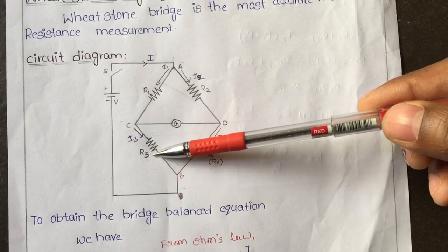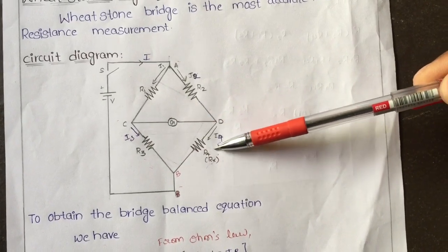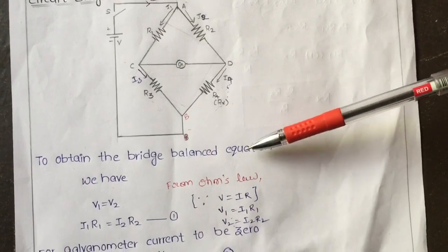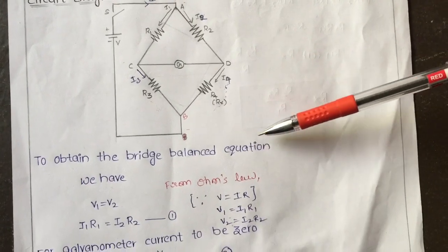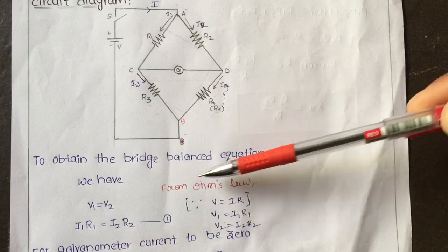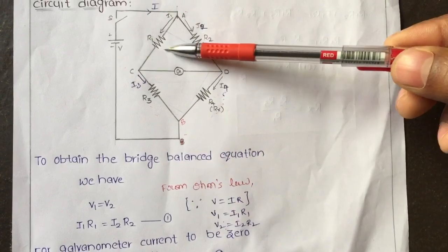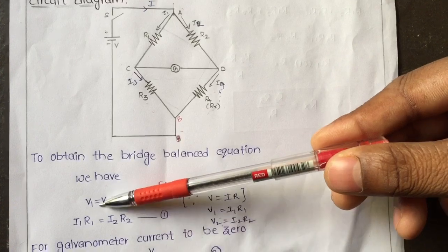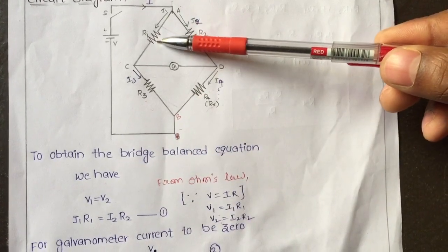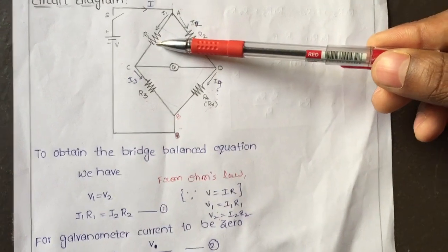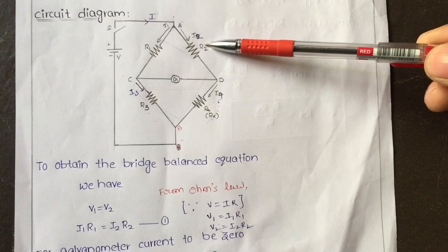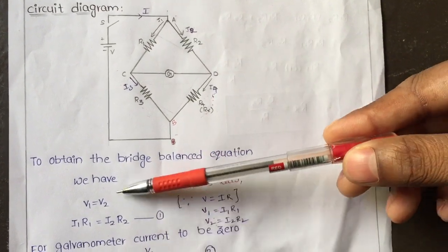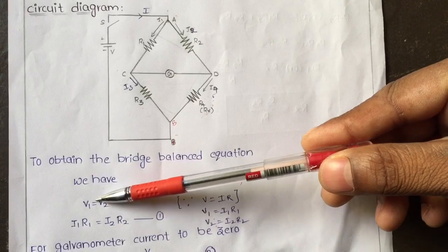Similarly, across R3 the current is I3 and across R4 it is I4. In order to obtain the bridge balance equation: when two resistors are connected in parallel the voltage across them is the same, so voltage across R1 is V1 and voltage across R2 is V2 — both are equal, so we can write V1 = V2.